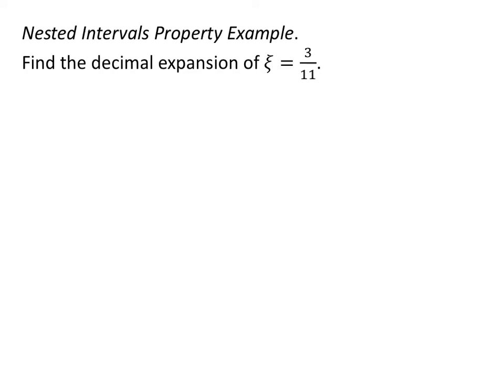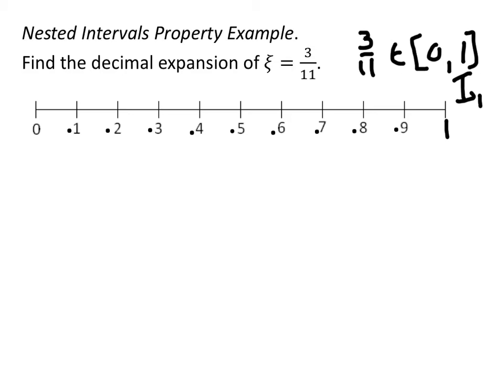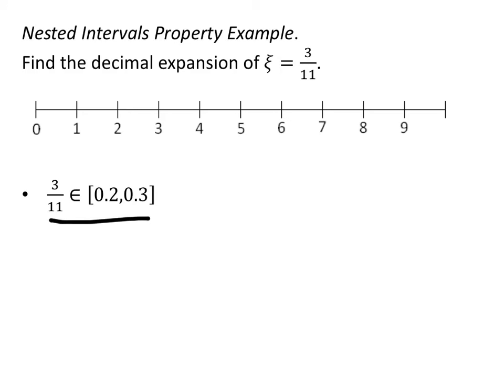Now we're going to look at an application of this, and it has to do with decimal expansions. I want to find the decimal expansion for 3 elevenths, and I want you to think about this in a slightly different way. We're going to take the interval from 0 to 1. I know that 3 elevenths is somewhere between 0 and 1 — it's in the interval from 0 to 1, and I'm going to call this i sub 1. Now I want to locate 3 elevenths; it turns out it's between 0.2 and 0.3, so that's going to be my second interval in the nested sequence — i sub 2.